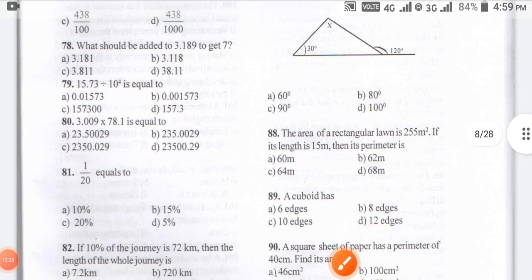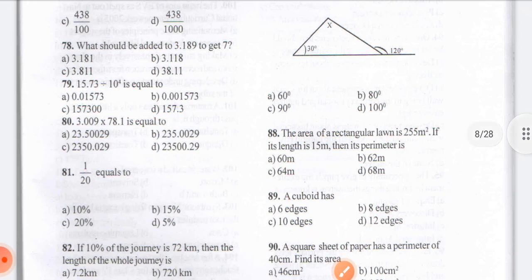Now question 79: 15.73 divided by 10 to the power 4. When you solve 15.73 divided by 10 to the power 4, the answer is coming for 79 as option B — that is 0.001573.